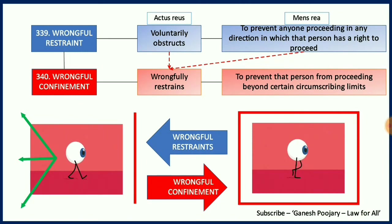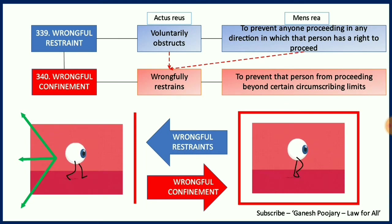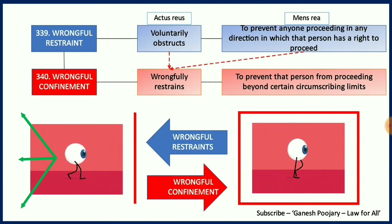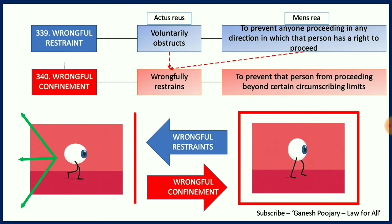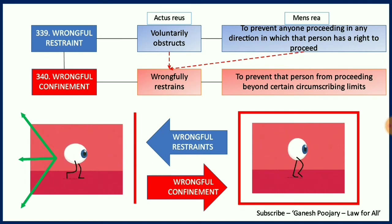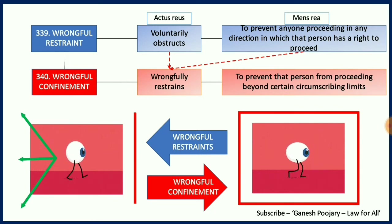To illustrate further: imagine Mr. A and Mr. X. A wants to go to market but X is not allowing A to go to market, however A is free to go anywhere else — playground, school, home. In that case X is creating wrongful restraint against A. On the other hand, if X locks Mr. A in a room, then it becomes wrongful confinement because A cannot go anywhere. That is how you differentiate sections 339 and 340.